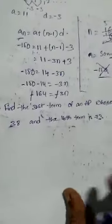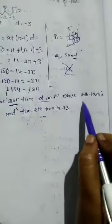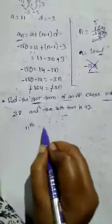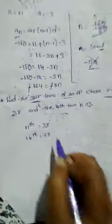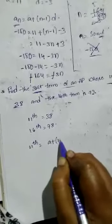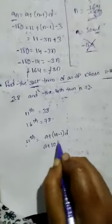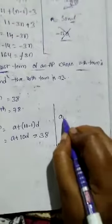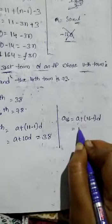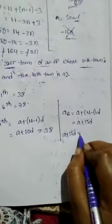Next question. Here given, find the 31st term of AP. We have to find 31st term, and given 11th term is 38 and 16th term is 73. For 11th term, we know the formula: A plus n minus 1 into D. Here n is 11, so 11 minus 1 into D, A plus 10D which is equal to 38. Same way, 16th term: A plus 15D equals 73.